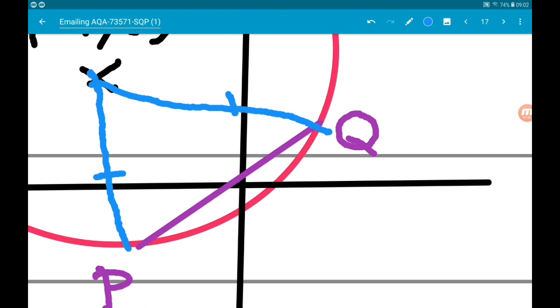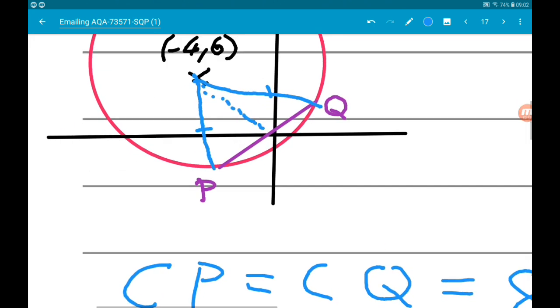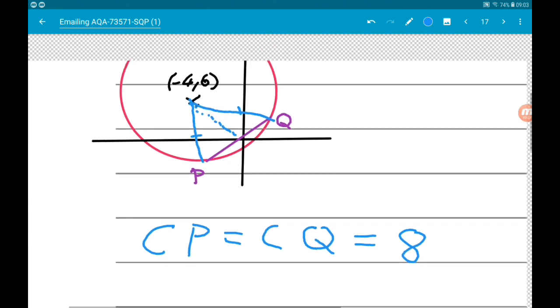Now if we could work out the length C to O we are then going to be dealing with right angle triangles for which we can apply Pythagoras. So the length CO squared - again we are thinking now Pythagoras.